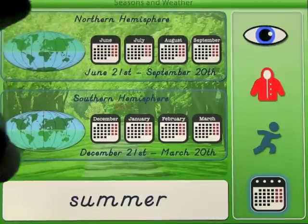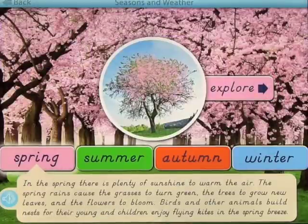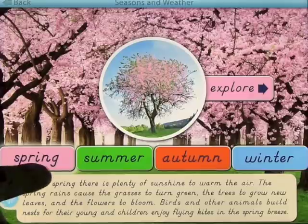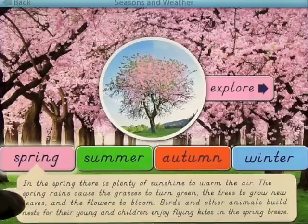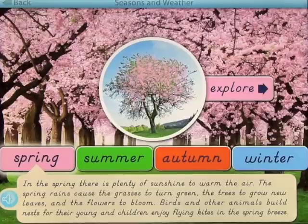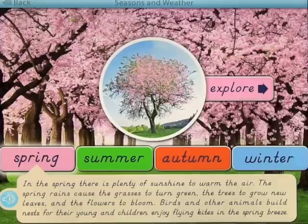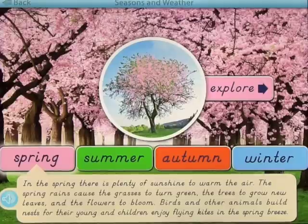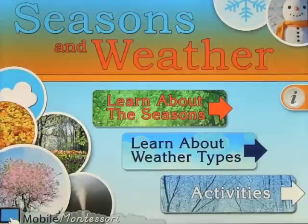It's nice how it's broken down into northern and southern hemispheres. If you also press the audio button it'll tell you about that season. Here's spring for example: 'In the spring there is plenty of sunshine to warm the air. The spring rains cause the grasses to turn green, the trees to grow new leaves, and the flowers to bloom. Birds and other animals build nests for their young and children enjoy flying kites in the spring breeze.'